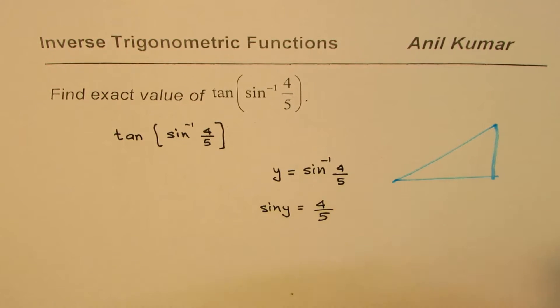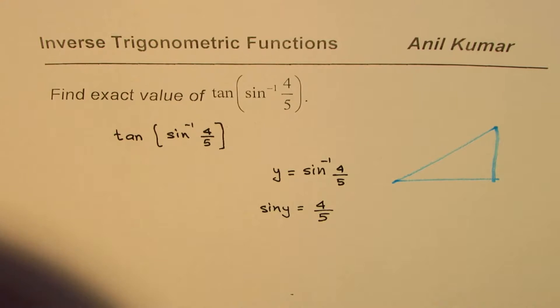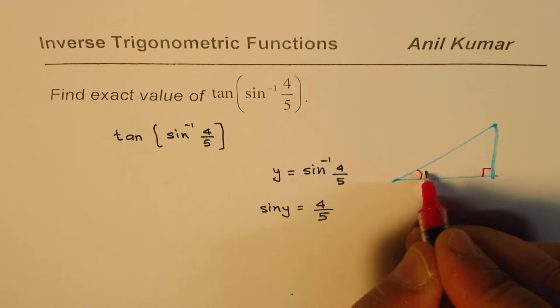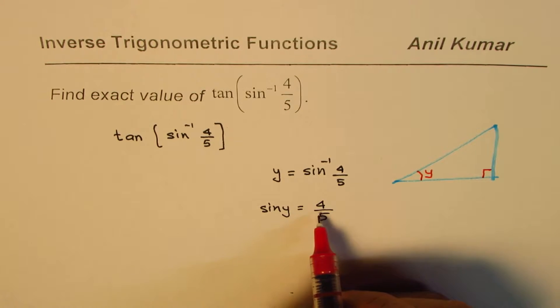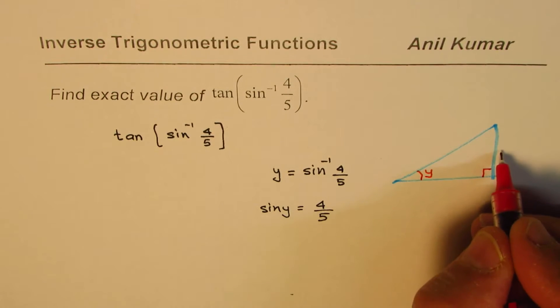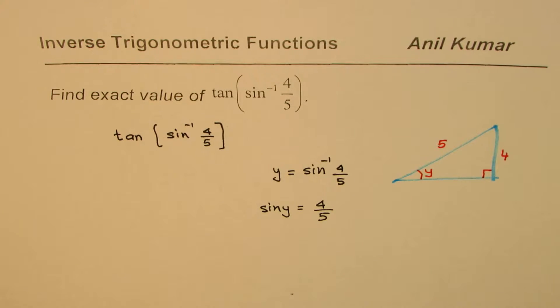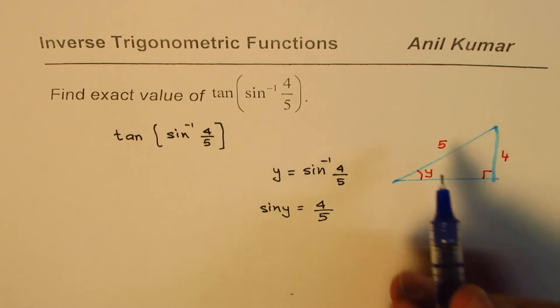In this triangle, which is a right-angle triangle, that is the angle y for us. We're looking for sin(y) to be 4/5. That means the opposite side is 4 and the hypotenuse is 5.